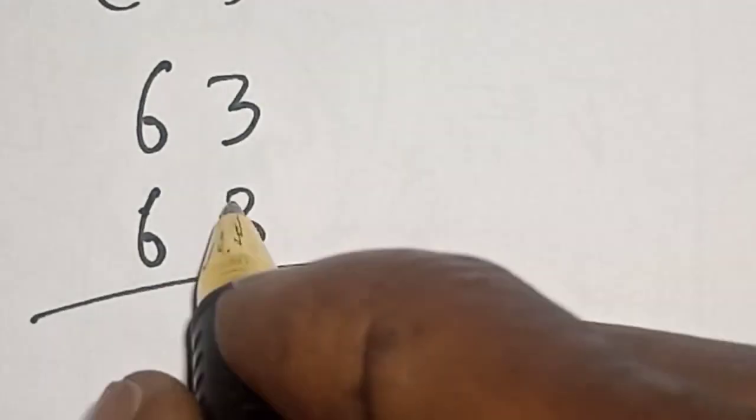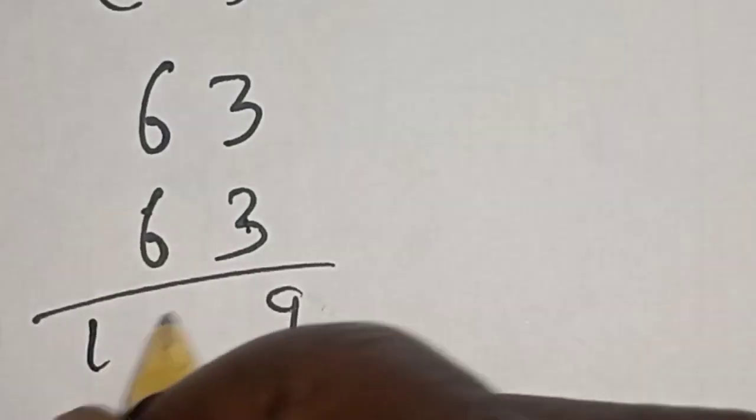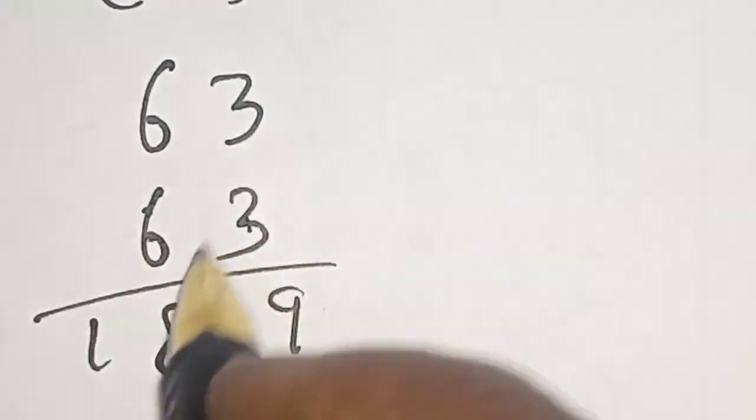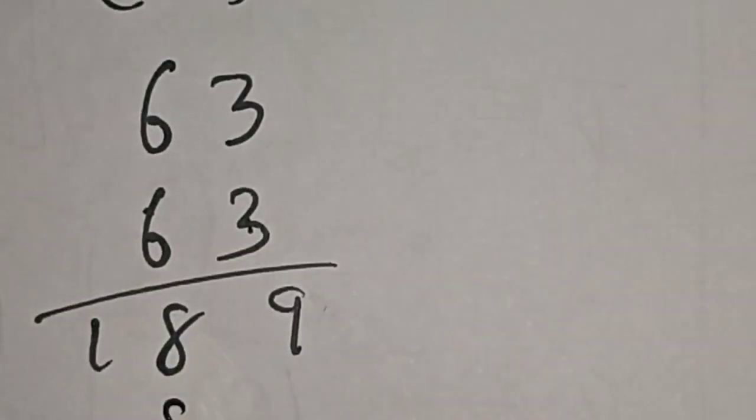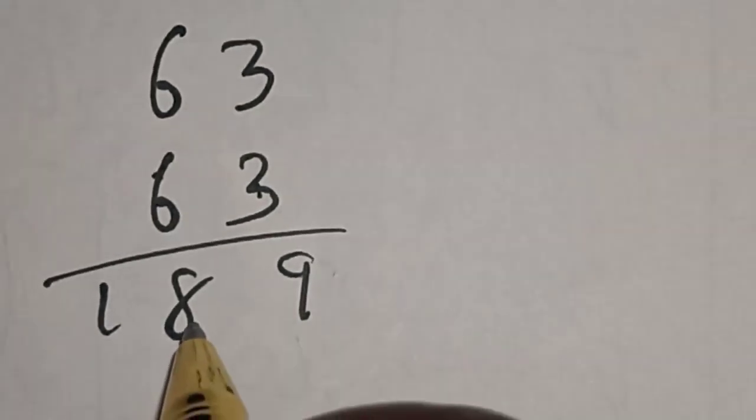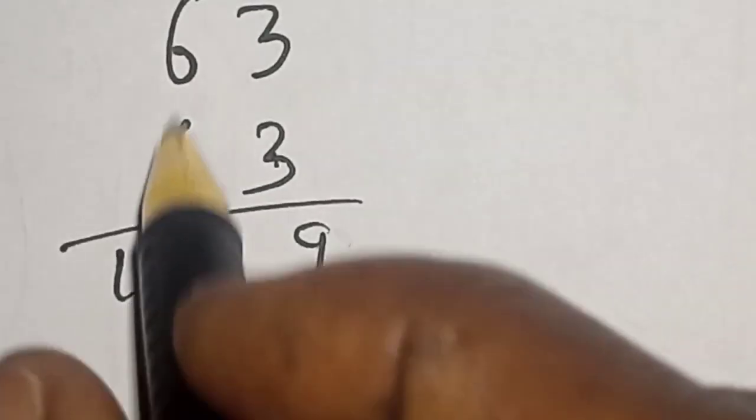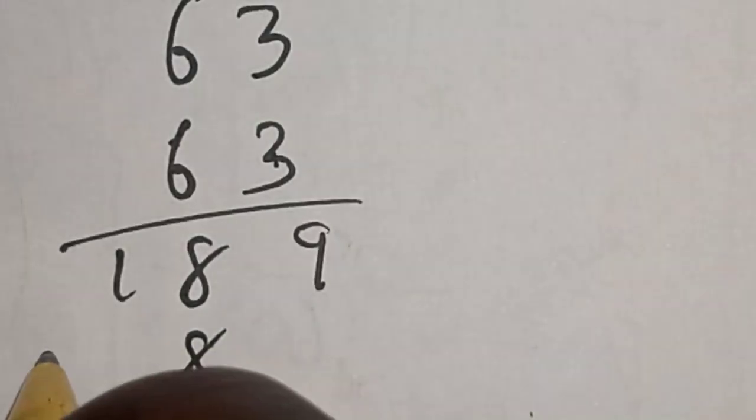Then this is 3 times 3 equals 9. 3 times 6, this is 18. Then this is 3 times 6, 18. 8 remain 1.